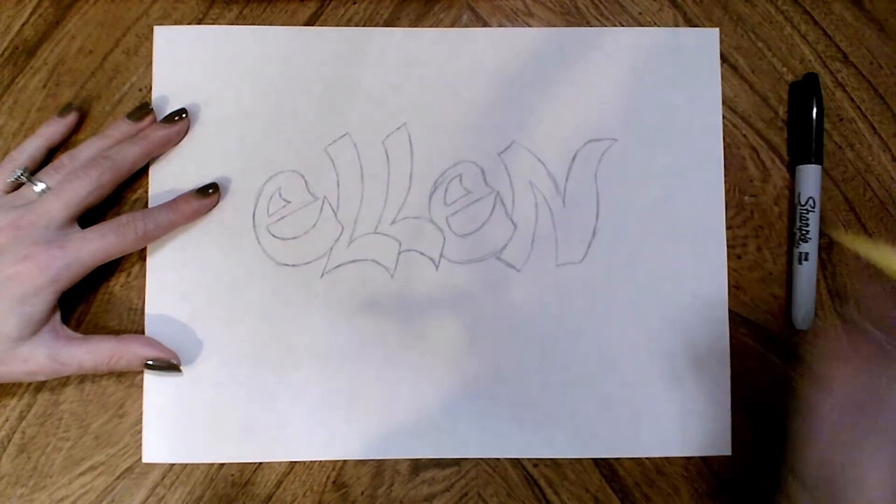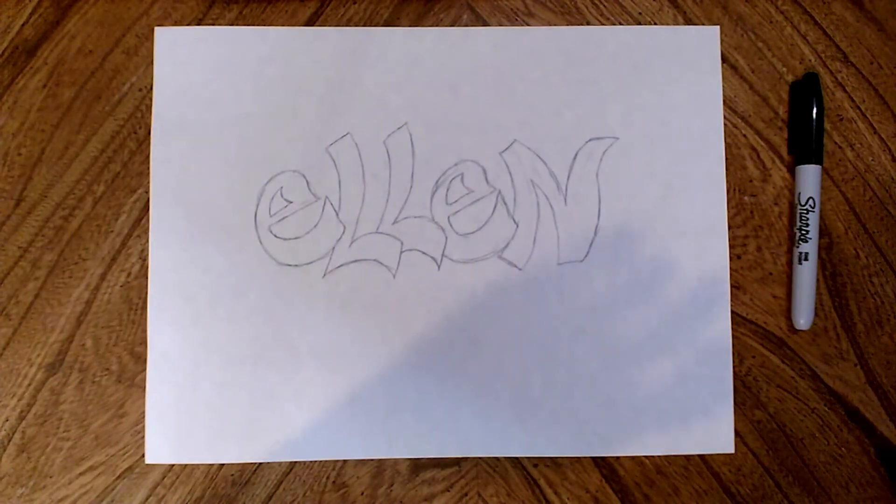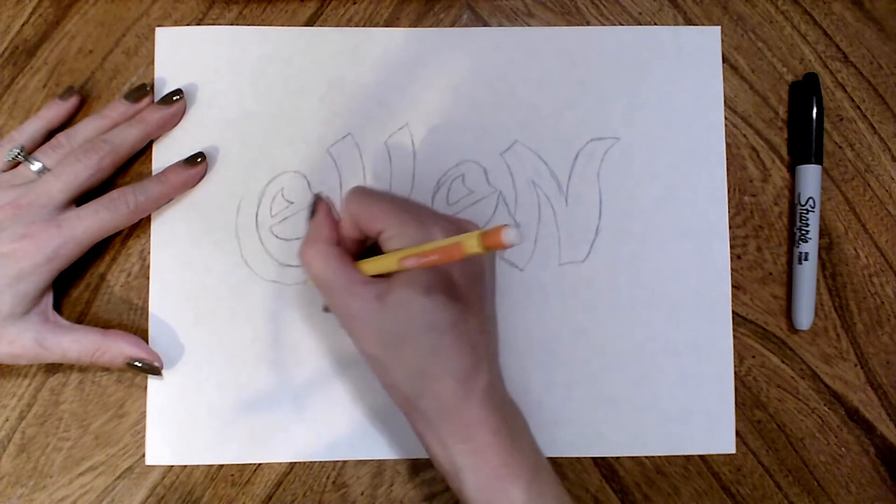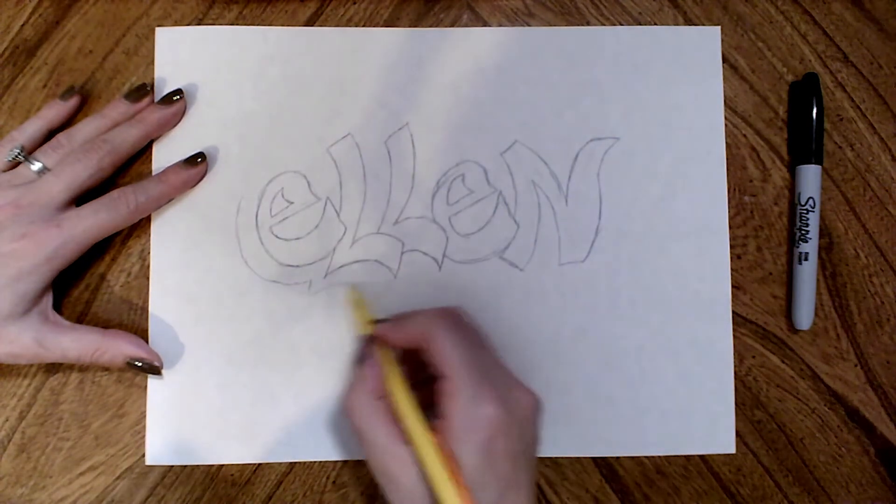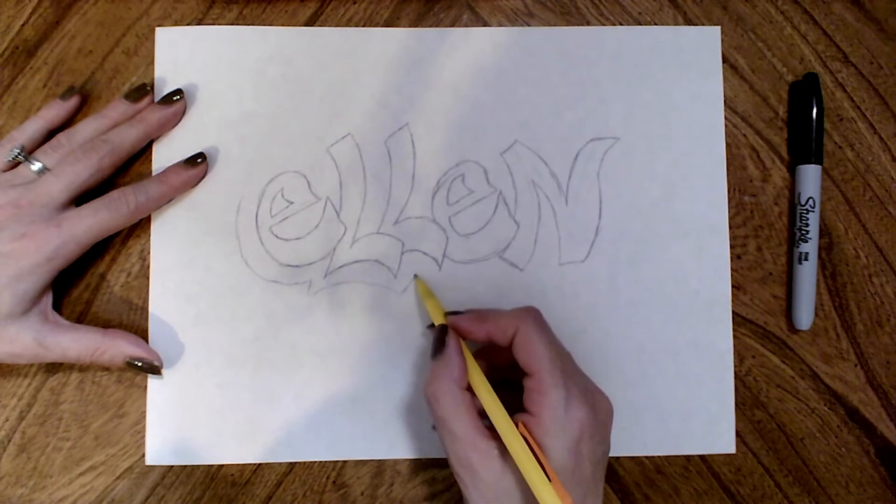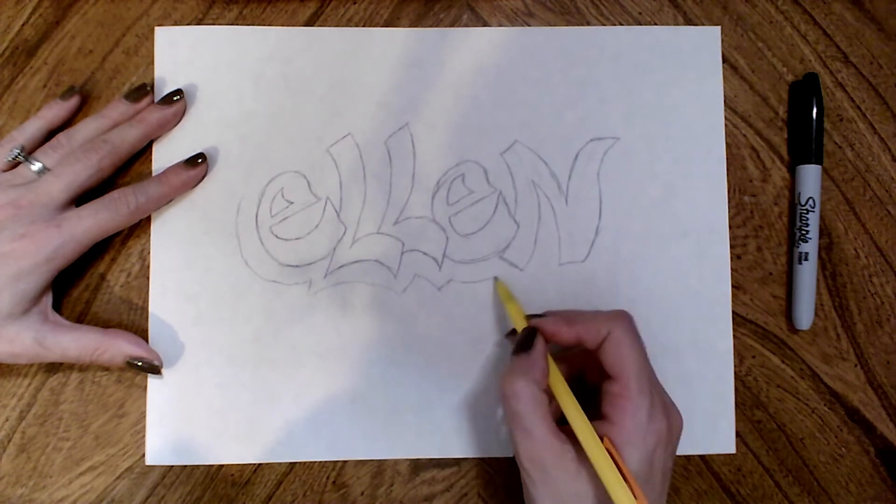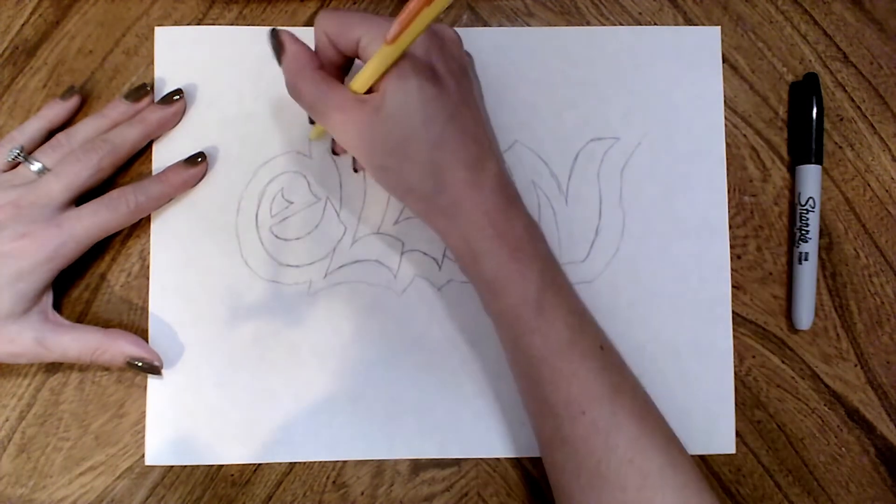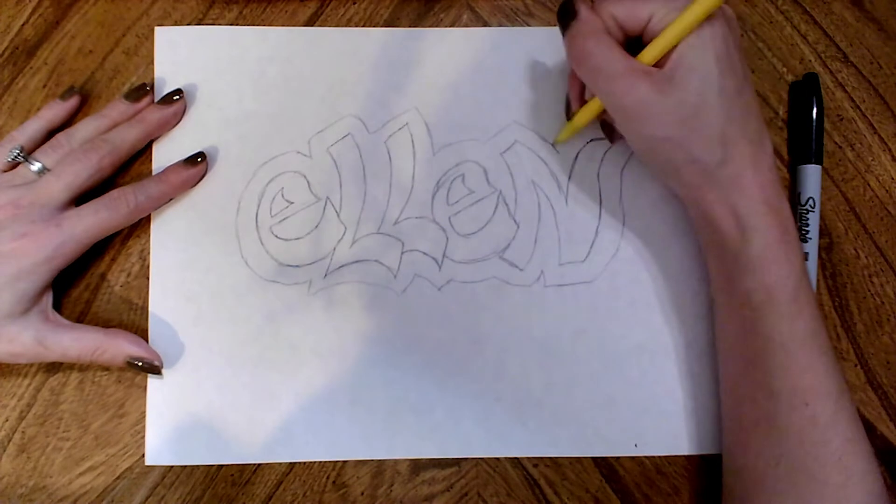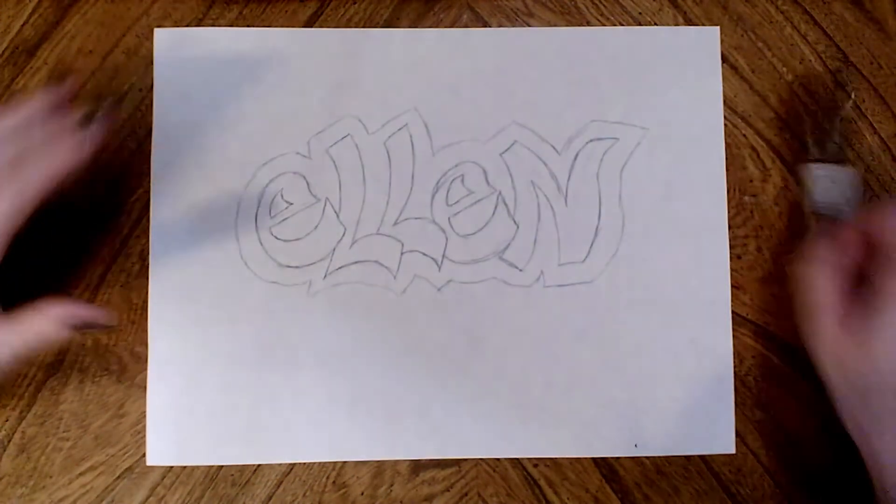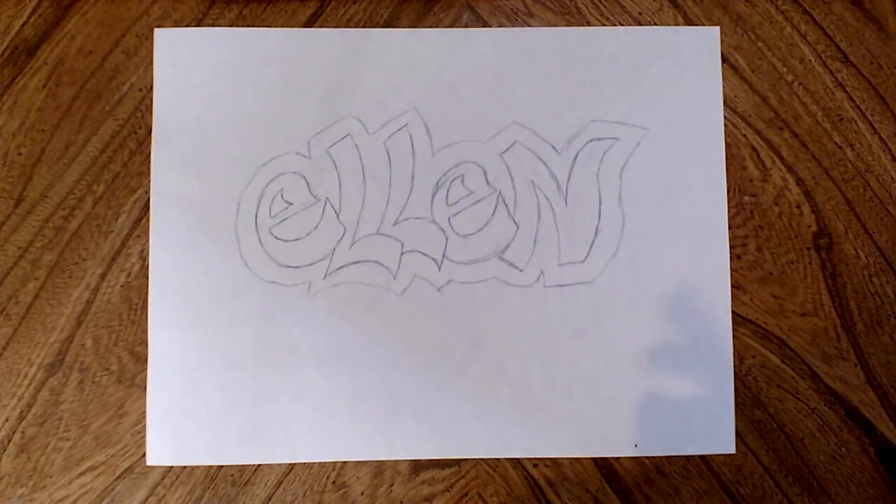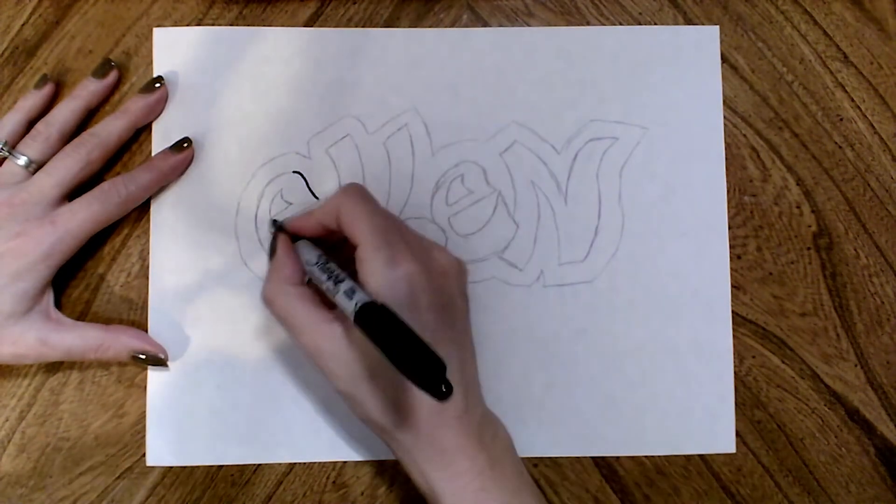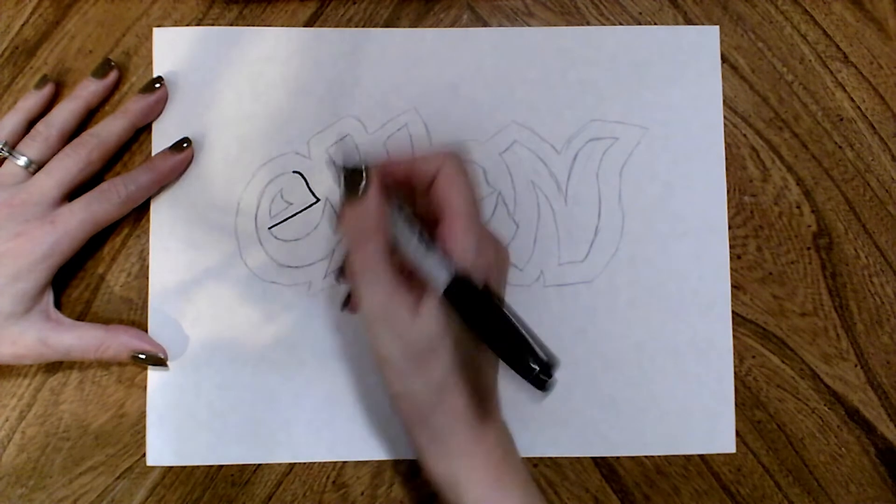Now that I've got the letters blocked out, I'm going to put a little cloud shape around it just to kind of create a contour. You want to add any other decorations, little stars, hearts, anything around here, that's totally up to you. And I'm going to trace over the letters with my sharpie, or like I said, if you don't have a sharpie you can use a black marker or any other color you want.